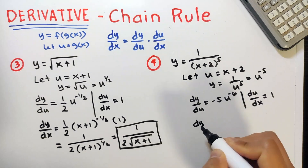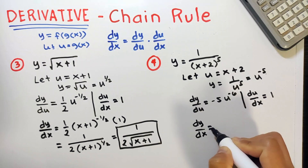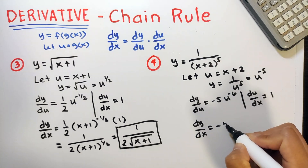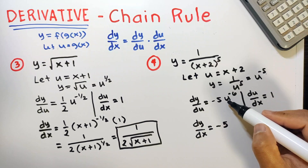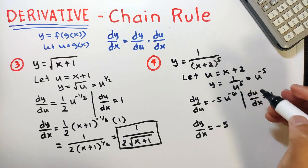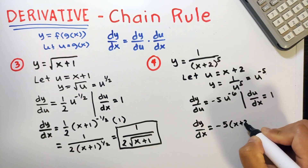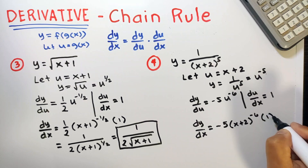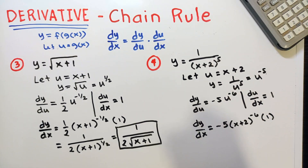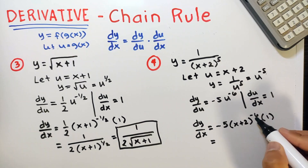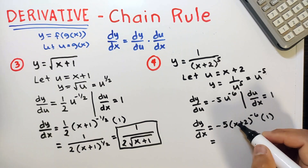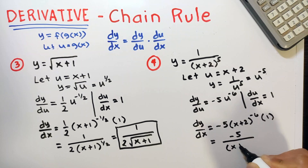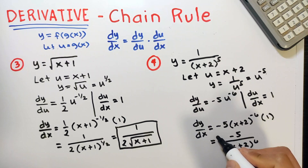dy over dx equals the product of the two derivatives. That's negative 5, and in this step we substitute the original value of u, which is x plus 2, raised to negative 6, multiplied by the derivative of u with respect to x, which is 1. Since we have a negative exponent, we write this in the denominator to make the exponent positive. This is the final answer.